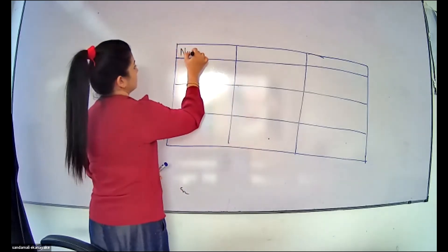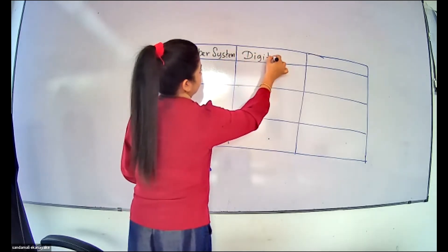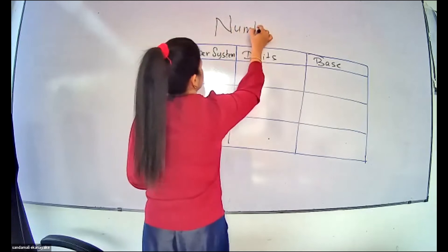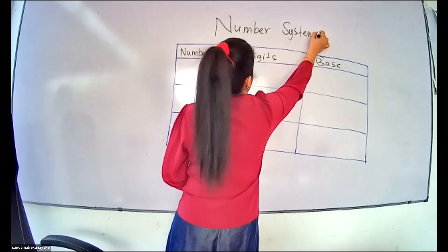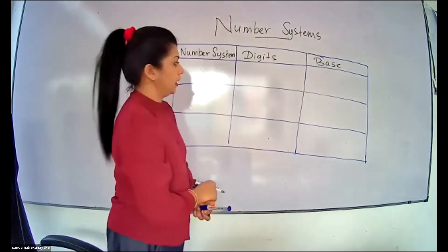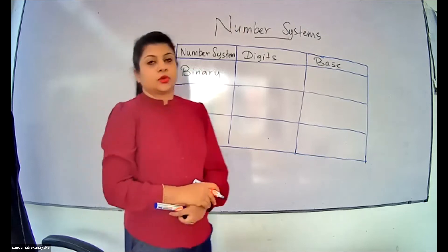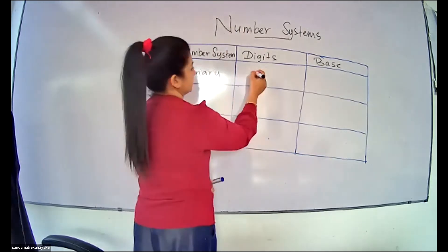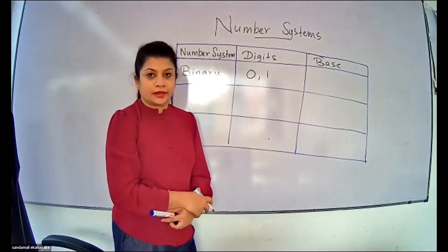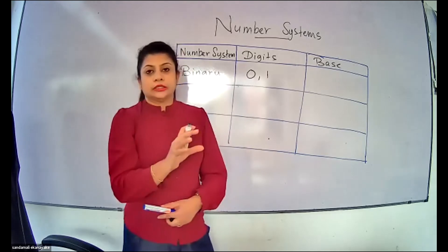So this is the number system. The heading you can write down is 'Number System,' and under that you can draw a table. The first number system we have to learn is binary. If you take the binary number system, you get two digits under that — that means ones and zeros. This is the language computers can understand: binary language, or machine language as you call it. That's why you all need to learn these number systems.